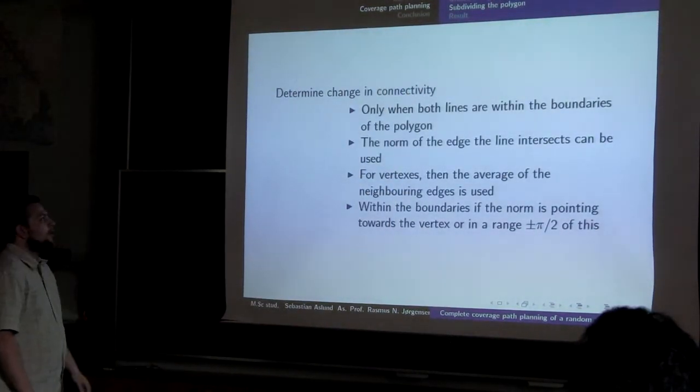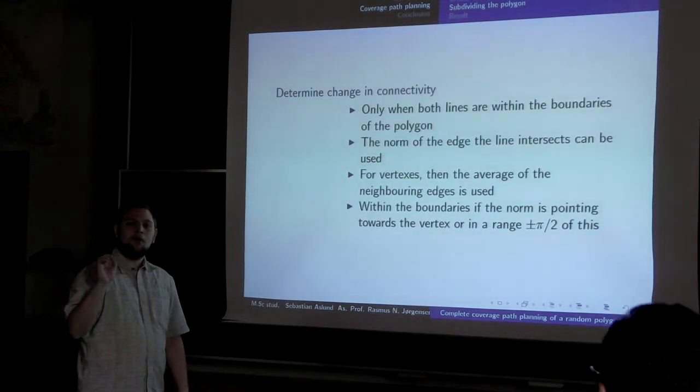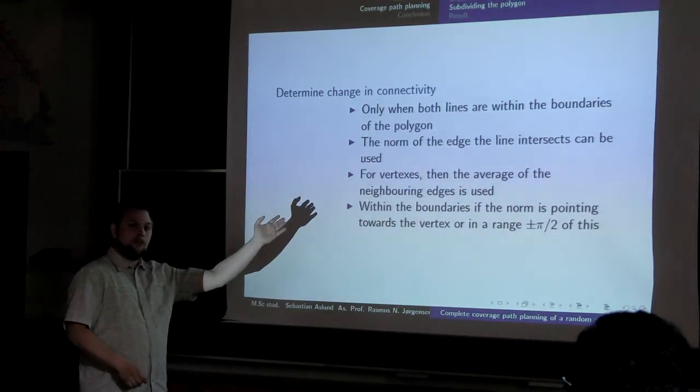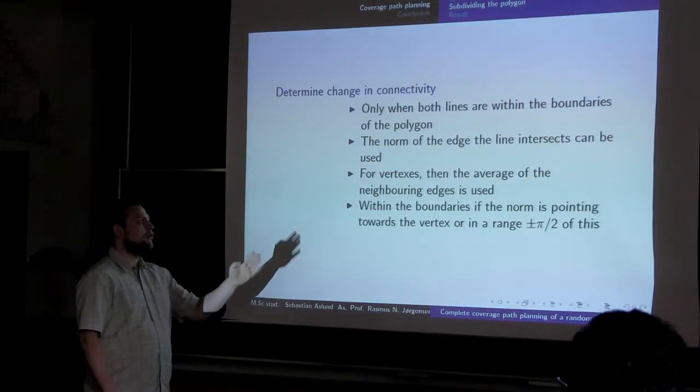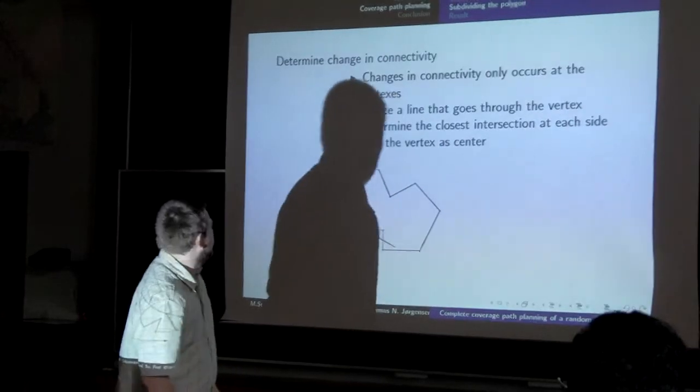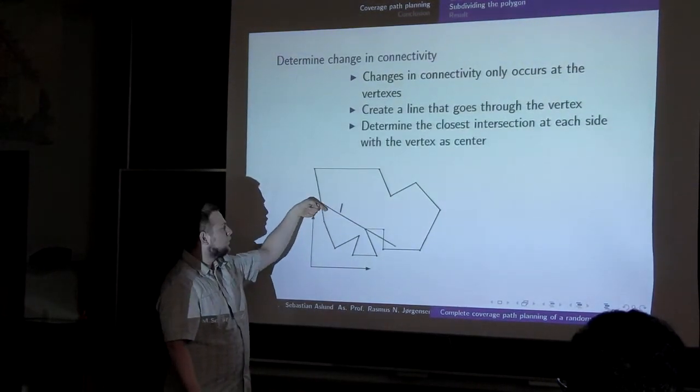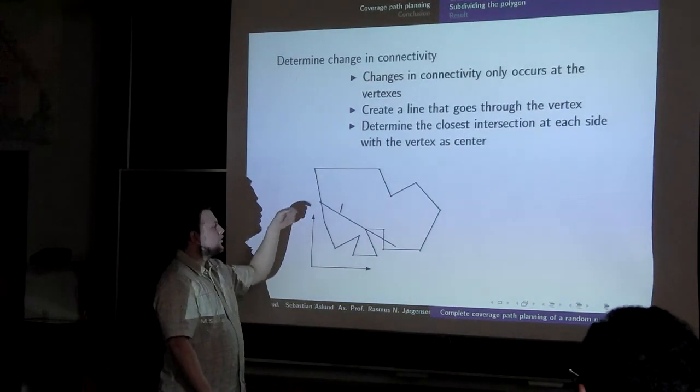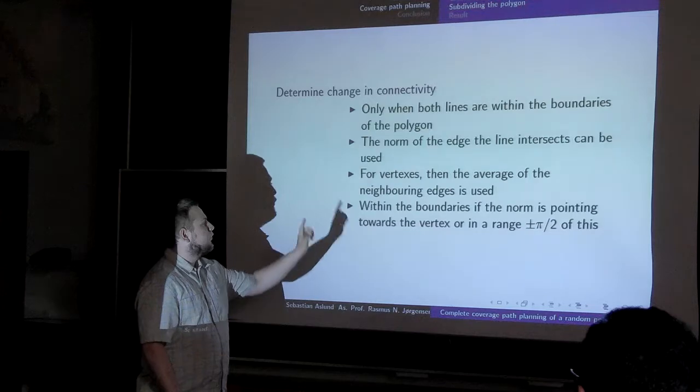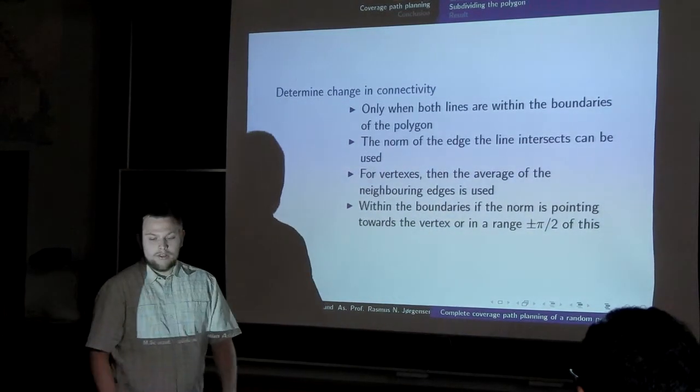Again the norm is coming to our rescue. The line is intersecting an edge and we use the norm of that edge to determine whether it is outside or inside the boundaries. There are also cases where it intersects a vertex, and with this one we just use the average of the neighboring edges around it. We simply assume that if the norm is pointing directly towards the vertex, or within a range of plus or minus 90 degrees, then it's inside the boundaries.